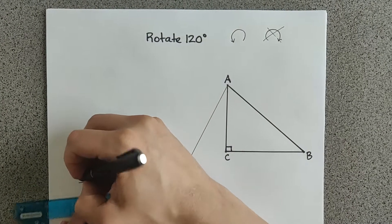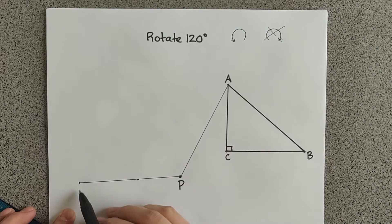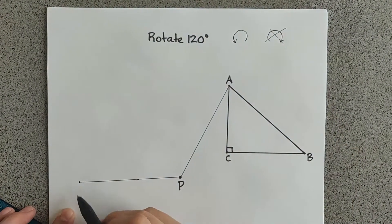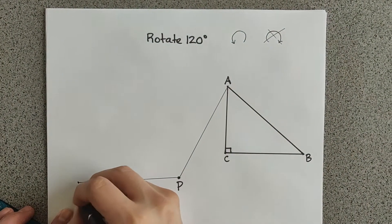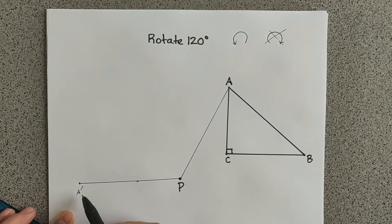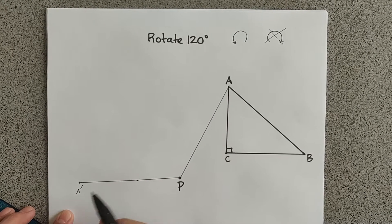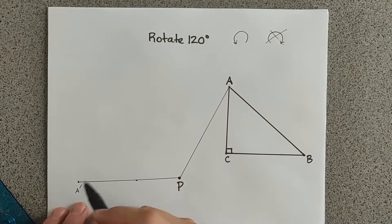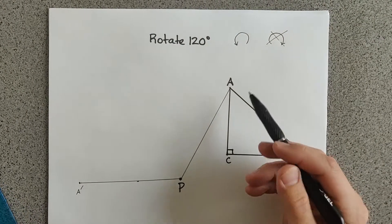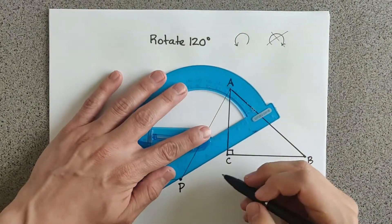Line up your two points and draw a line that's 4 inches long right there. This point was A, so now this point is A prime. Make sure you always draw your little prime symbol on there to show that this is the copied point.